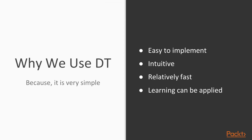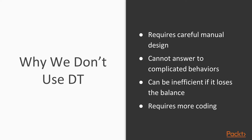The advantages of decision trees: they are easy to implement, easy to debug and understand, relatively fast, and learning can be applied. On the other hand, decision trees require careful manual design, they cannot handle complicated behaviors, and since they are a tree structure, if they lose their balance they can become inefficient. Finally, decision trees typically require more coding.